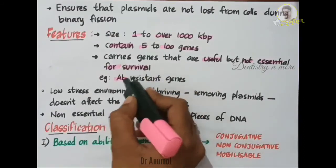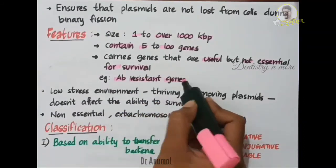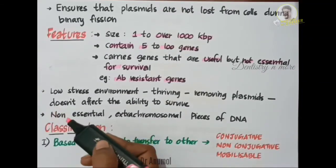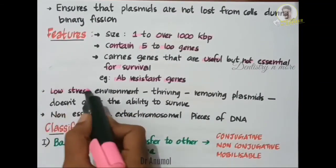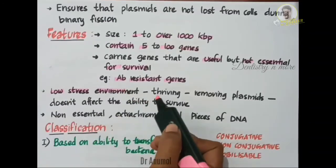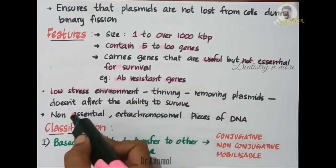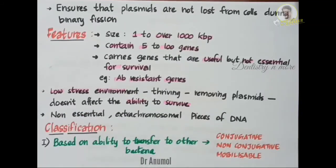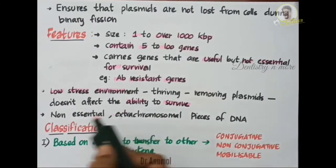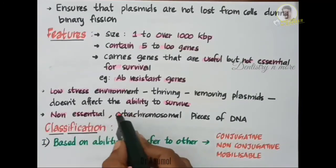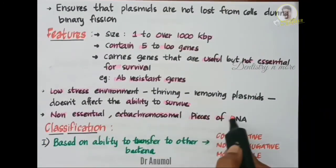For example, some plasmids contain antibiotic resistant genes. As long as bacteria is thriving in a low stress environment, removing all the plasmids would not affect the ability of bacteria to survive in that particular environment. So in general, plasmids are non-essential extra-chromosomal pieces of DNA.